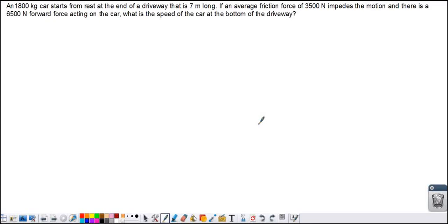An 1800 kilogram car starts from rest at the end of a driveway that is seven meters long. If an average friction force of 3,500 newtons impedes the motion, and there is a 6,500 newton forward force acting on the car, what is the speed of the car at the bottom of the driveway?